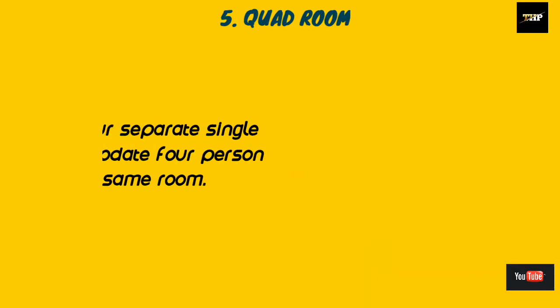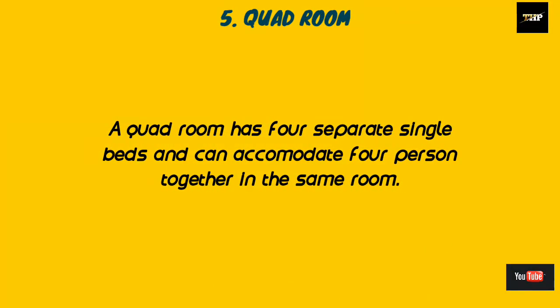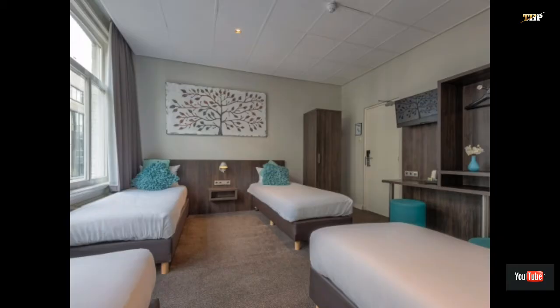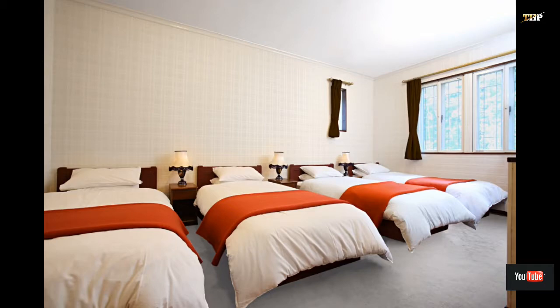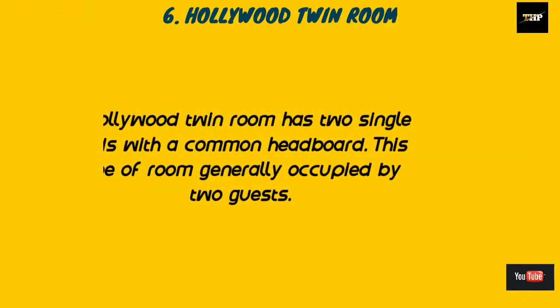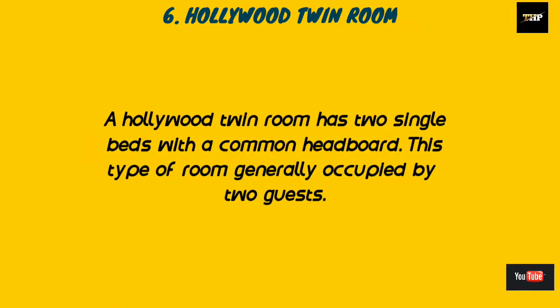The fifth one is the quad room. A quad room has four separate single beds and can accommodate four persons together in the same room. This room is larger than the triple bedroom, with four single beds for four persons. Here are the images of the quad bedroom.